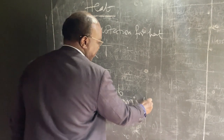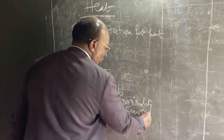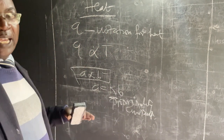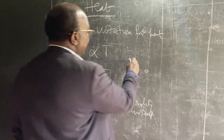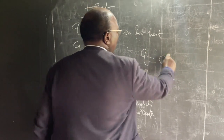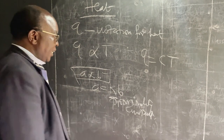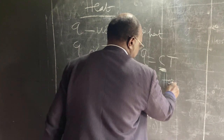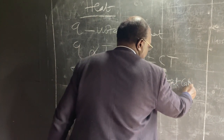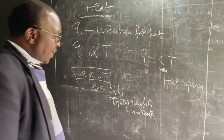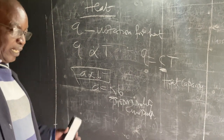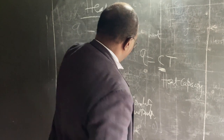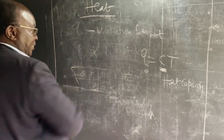So in the same way, using this mathematical form for the relationship between heat and temperature, we can say that Q is proportional to temperature, and the proportionality constant here is what we call the heat capacity. That introduces the term heat capacity, which is very important for us to know.